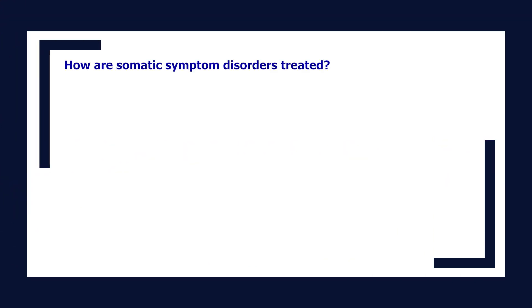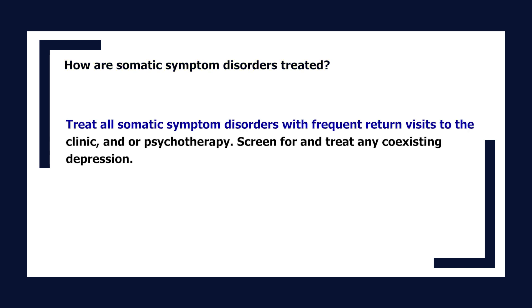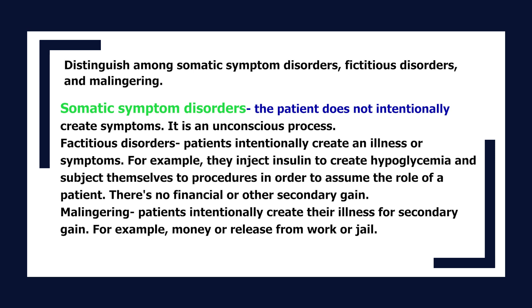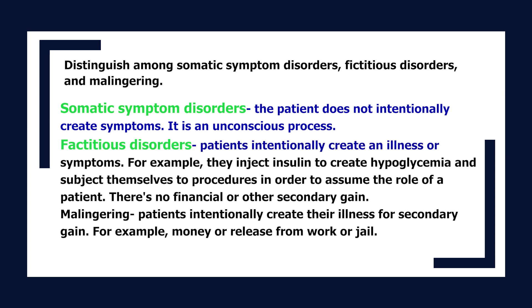How are somatic symptom disorders treated? Treat all somatic symptom disorders with frequent return visits to the clinic and/or psychotherapy. Screen for and treat any coexisting depression. In somatic symptom disorders, the patient does not intentionally create symptoms — it is an unconscious process. In factitious disorders, patients intentionally create illness or symptoms (e.g., injecting insulin to create hypoglycemia) to assume the role of a patient, with no financial or other secondary gain. In malingering, patients intentionally create illness for secondary gain, such as money or release from work or jail.